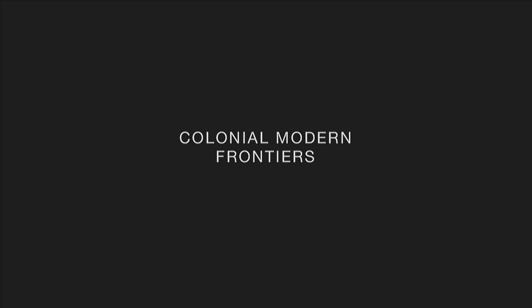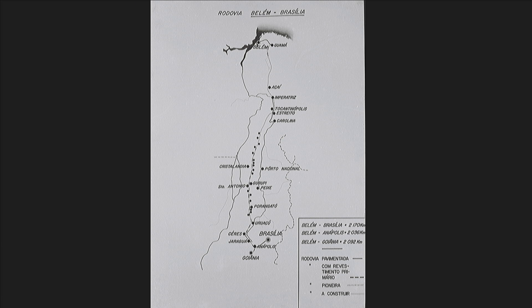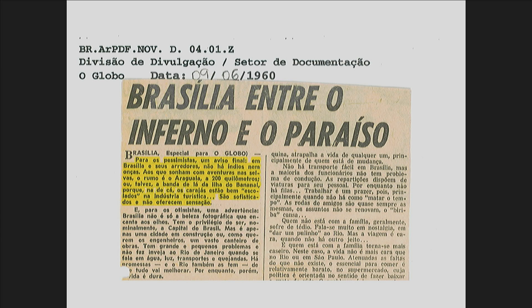I became interested in excavating the historical context from which these objects emerged. One of the indigenous groups most often depicted in Habitat was the Carajá people, famous for their dolls. Interestingly, the Carajá had a very particular relationship with Brasília, the modernist capital of Brazil. They lived near Bananal Island — a very large fluvial island, one of the largest river islands in the world — and I was trying to understand what was happening on their land while these objects were being published in magazines.